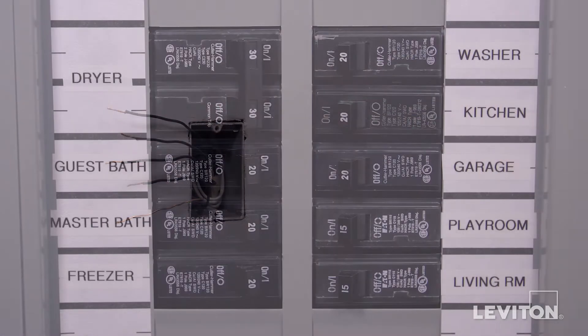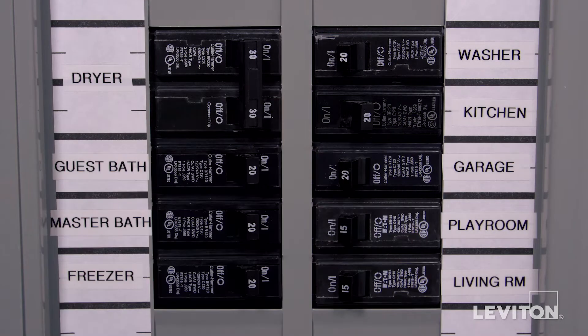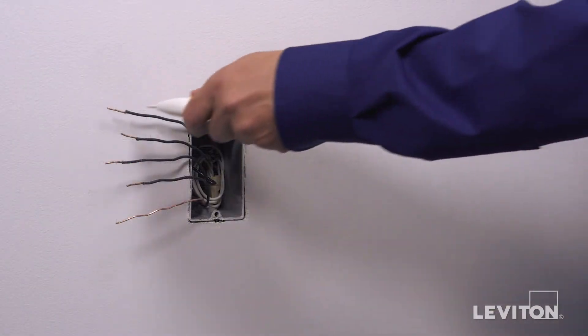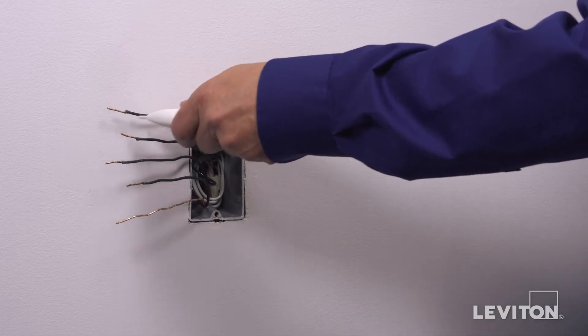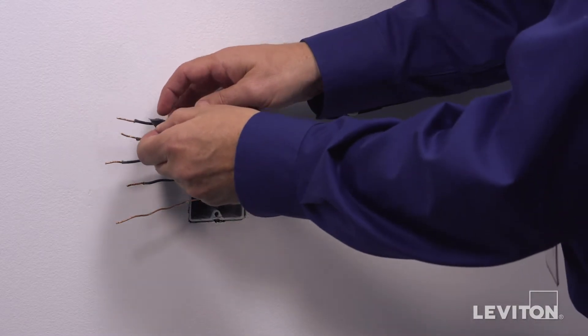Once identified, turn off the circuit breaker to shut power and test to ensure the power is off. Use a small piece of electrical tape to label the hot wire.